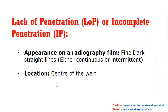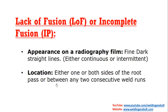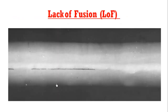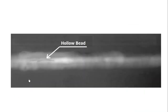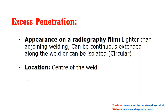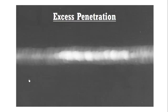In Part 1 of this video I had already explained lack of penetration, mismatch high-low, lack of fusion, and porosity — including different types like scattered porosity, cluster porosity, wormhole porosity, and elongated cavity. I also explained hollow bead, wormholes, and finally excess penetration.